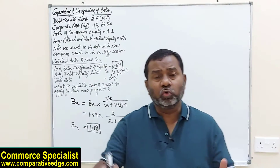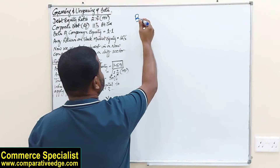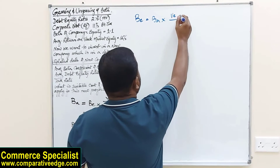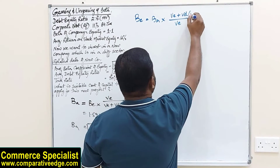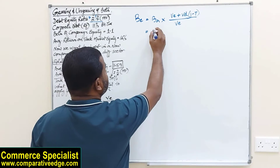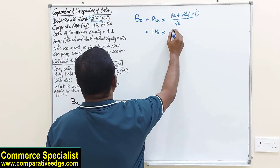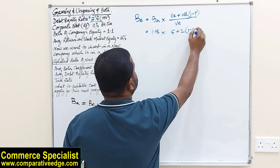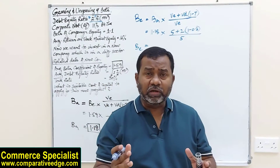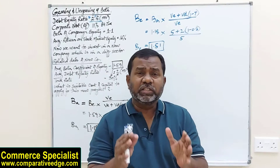Step 2: convert this ungeared beta into the geared beta of our industry, reflecting our capital structure. The formula for geared beta (equity beta) is: Equity Beta = Asset Beta × [(Equity + Debt × (1 − Tax)) / Equity]. Plugging in: 1.18 × [(5 + 2 × (1 − 0.3)) / 5]. Our debt-equity ratio is 2:5, so debt is 2 and equity is 5. This gives us an equity beta — the geared beta reflecting our industry — of 1.51.